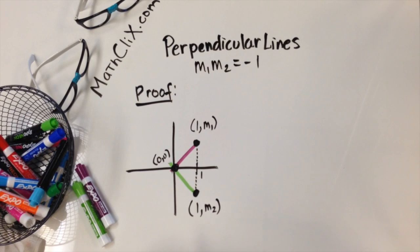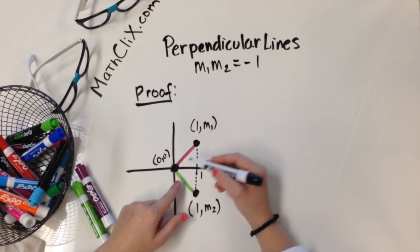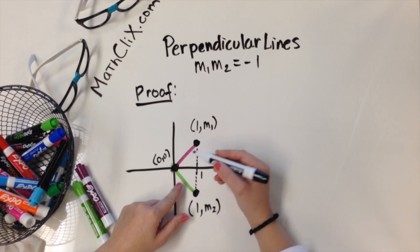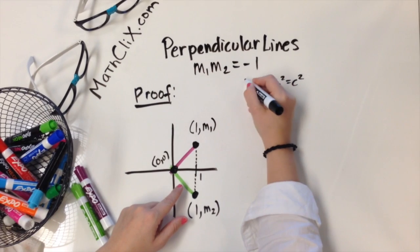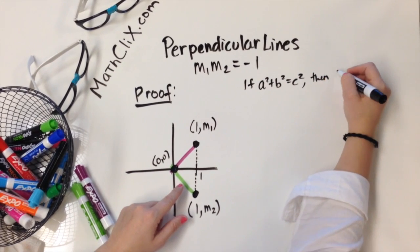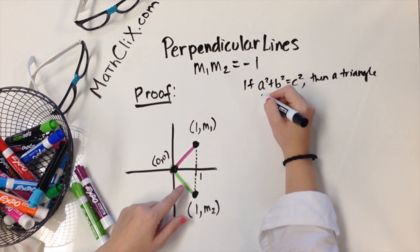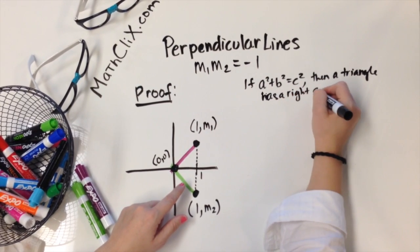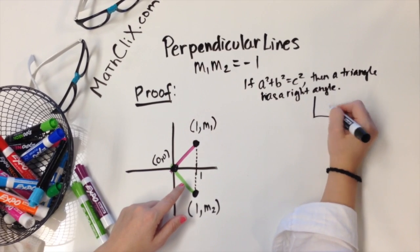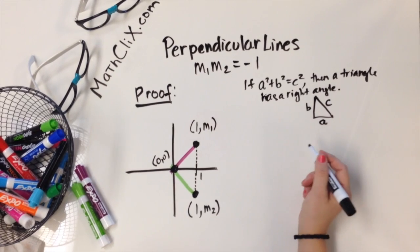So what we're going to do is use the converse to the Pythagorean theorem to show that it holds true, and if it holds true, then this must be a right angle. Okay, so that says that if a² + b² = c², then the triangle has a right angle.